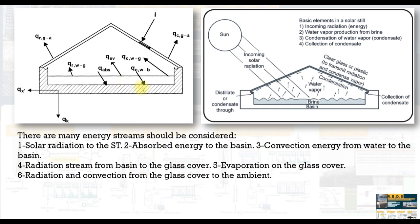We have convection between the water side and insulation. We have losses from the glass cover — radiation losses and convection losses. And we have energy trapped inside the solar still such as radiation energy from the water side to the glass, convection between the water side and the glass cover, and the evaporation energy.